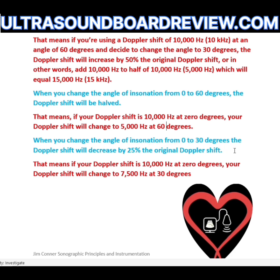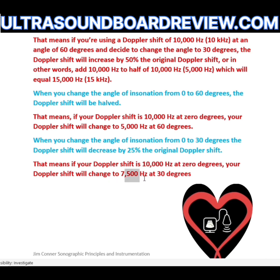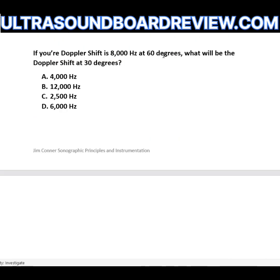If you change your angle from zero to 30 degrees, the Doppler shift will decrease by 25 percent. If your Doppler shift is 10,000 Hz at zero degrees, it will change to 7,500 Hz at 30 degrees. To find 25 percent quickly: take 50 percent (5,000 Hz), then halve that to get 2,500 Hz, and subtract 2,500 from 10,000 to get 7,500 Hz.